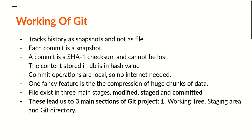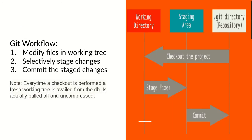This leads us to three main sections of a Git project: the working tree, the staging area, and the Git directory. The Git workflow: we modify files in a working tree, then we selectively stage changes, and then we commit the staged changes — saving the changes into the database, which is a snapshot of all you've done to the files.